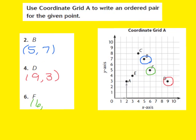Now I locate where F is on the y-axis. Starting from the origin, I move up 1, 2, 3, 4, 5. I stop at 5 because that is where F is located on the y-axis. So I write down 5 as my y-coordinate. Point F is located at 6, 5 — and that is our ordered pair.